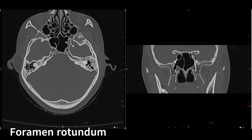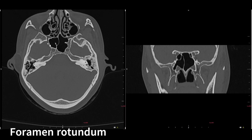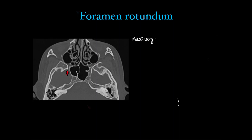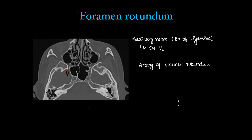It runs anterior to posterior, so on coronal you can see the cut section as circular. Contents of the foramen rotundum: the maxillary nerve, which is the second segment of the trigeminal nerve (V2); the artery of the foramen rotundum; and emissary veins running through it.